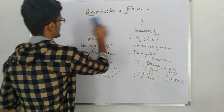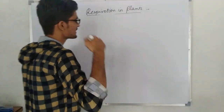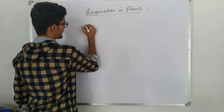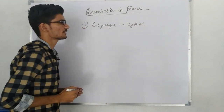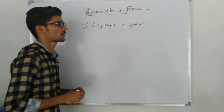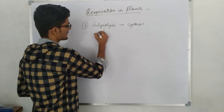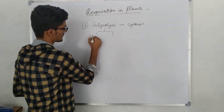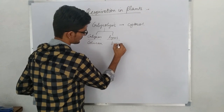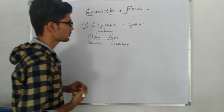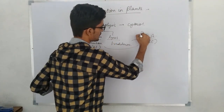Respiration is not a single-step reaction; it is a step-wise, enzymatically controlled process. The first step is glycolysis, which occurs in the cytosol. In this video we will read the basics and introduction of these steps; in further videos, each step will be studied in detail. Glycolysis can be split into 'glycos' meaning glucose and 'lysis' meaning breakdown. So glucose — a 6-carbon molecule — is broken down into pyruvic acid, a 3-carbon molecule, forming two molecules of pyruvic acid.